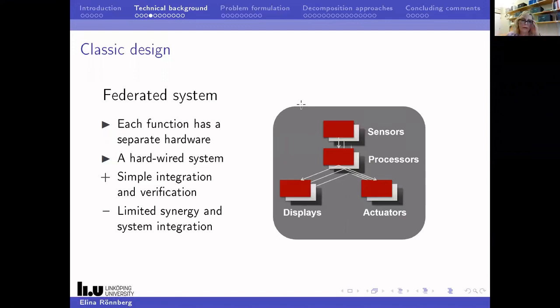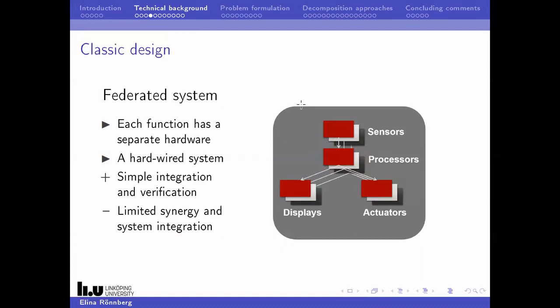Early aircraft used federated systems, meaning each function has separate hardware. If you want some functionality, you build an electronic box that handles it, and if that function needs to communicate with something else, you put a cable between the boxes — a hardwired system. That makes it very easy to verify that everything works in isolation and easy to integrate. But the downside is limited synergy — you cannot fully integrate the system. This was how it was done until some decades ago.